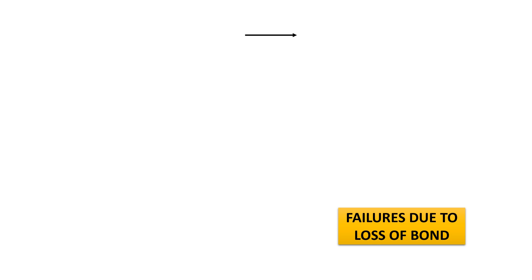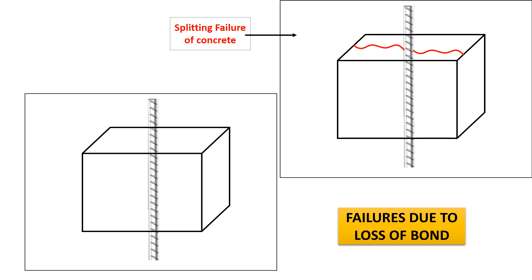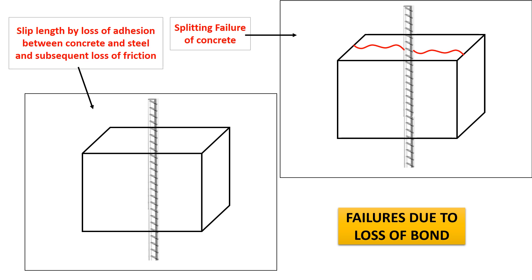The failures that occur when bond is lost between concrete and steel include: when the circumferential tension force exceeds the tensile strength of concrete, a splitting force develops within concrete, leading to splitting cracks. Two or three angled cracks may be visible around bars embedded in concrete. Accompanied by or preceding cracking, a slip may occur by loss of adhesion and friction between concrete and steel, and the steel bars slip over a particular slip length.